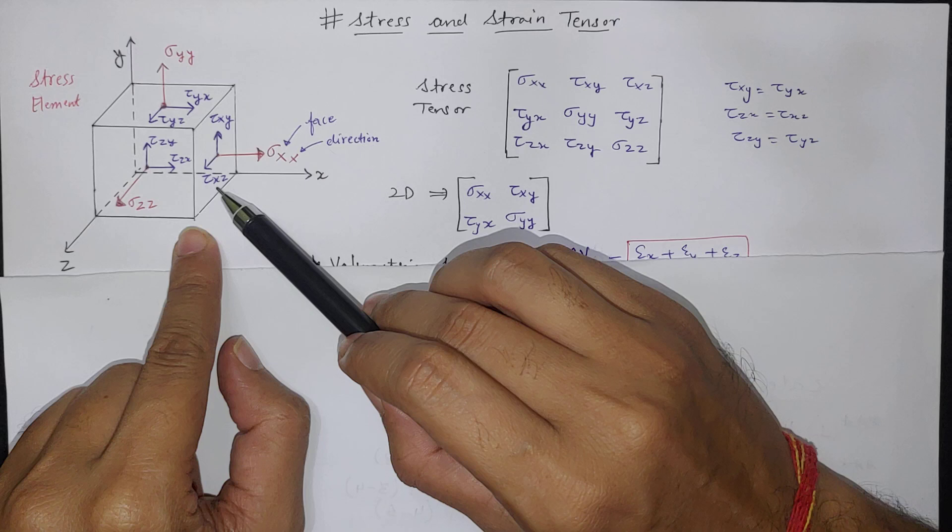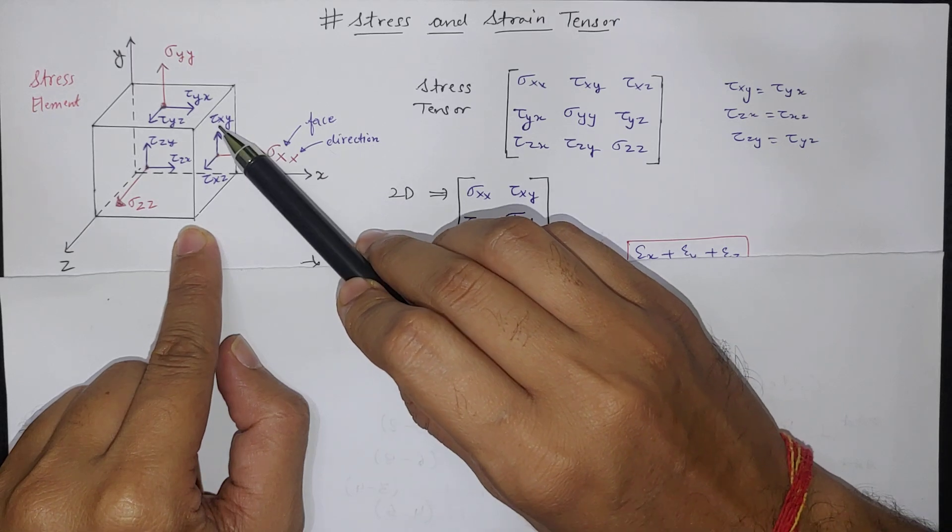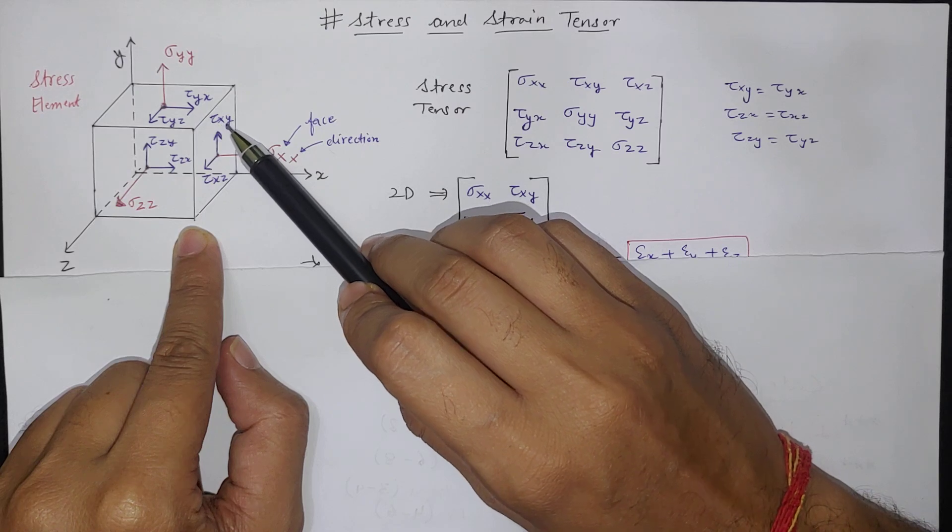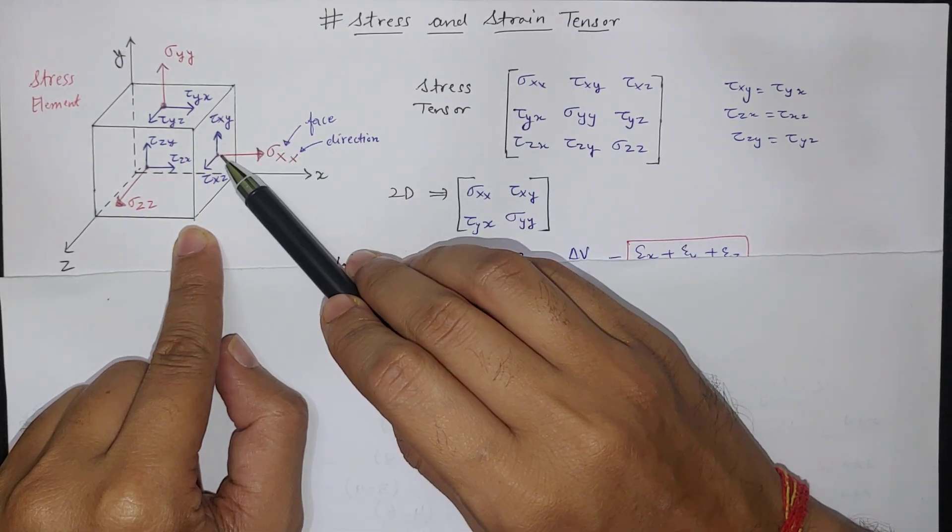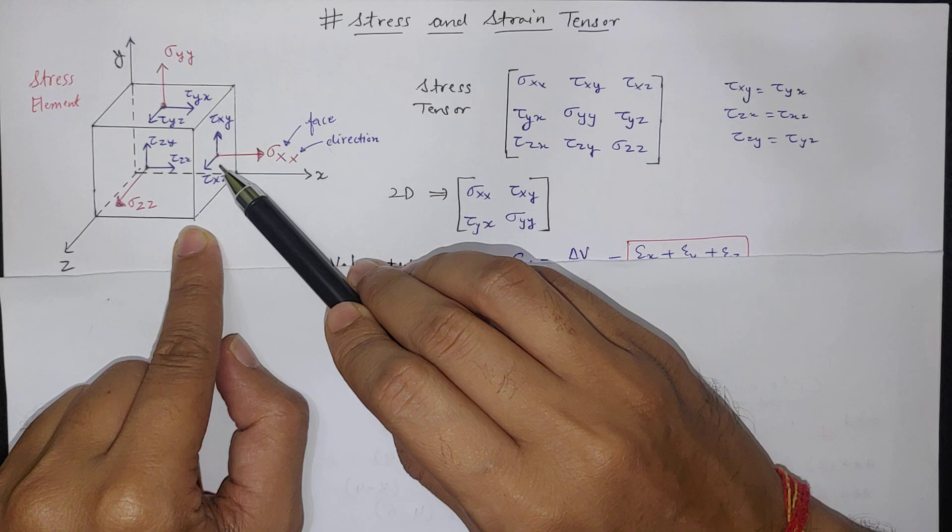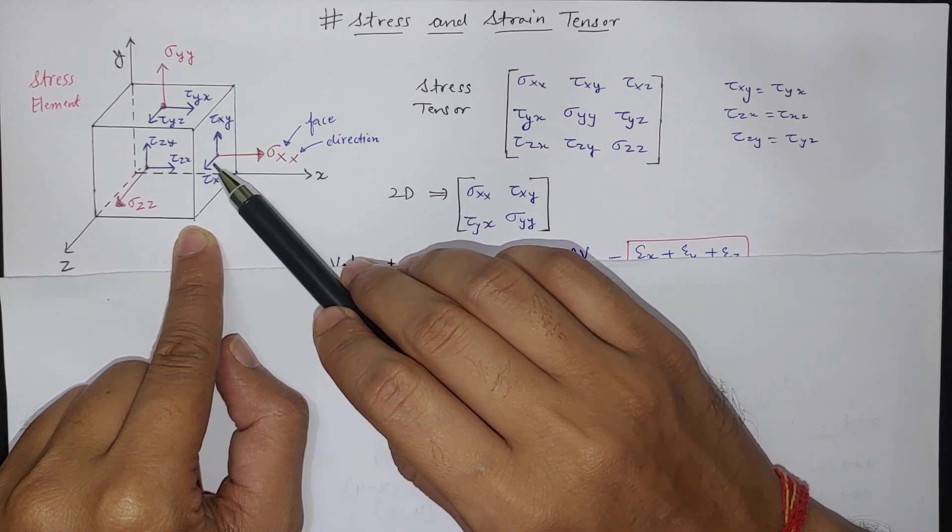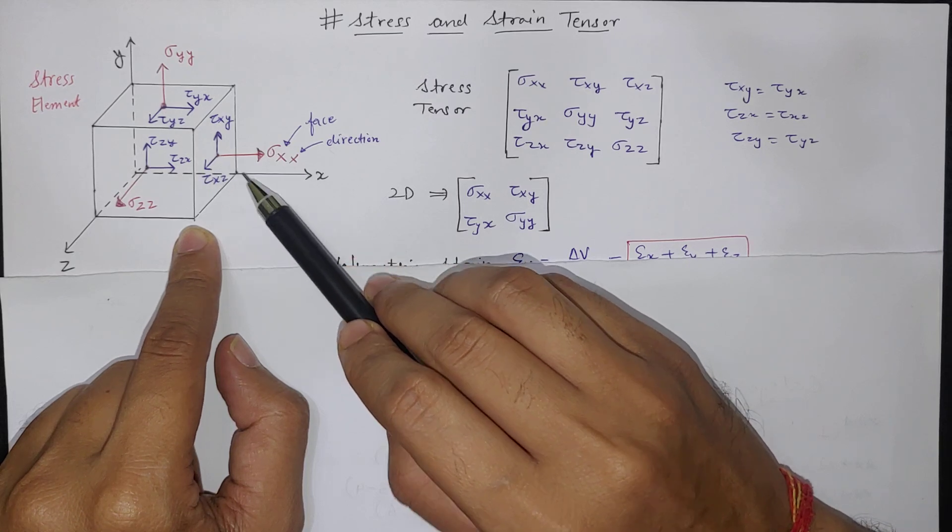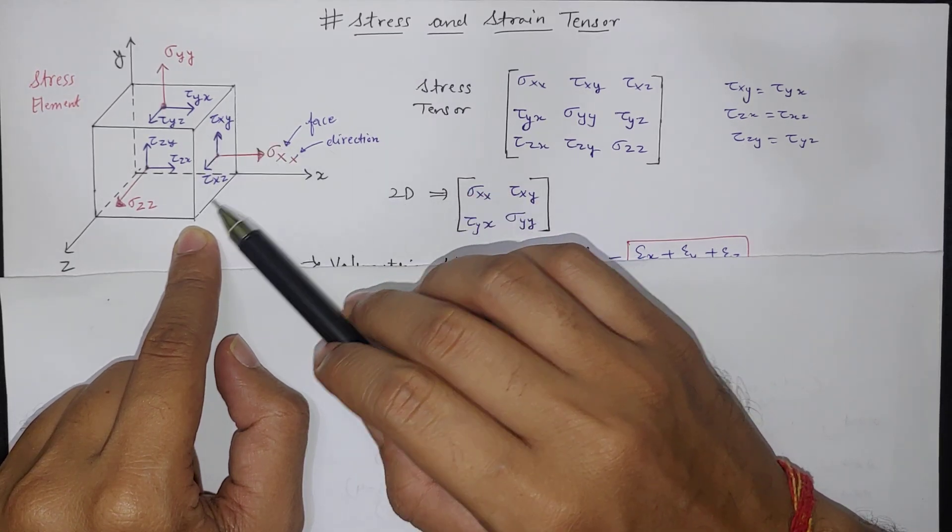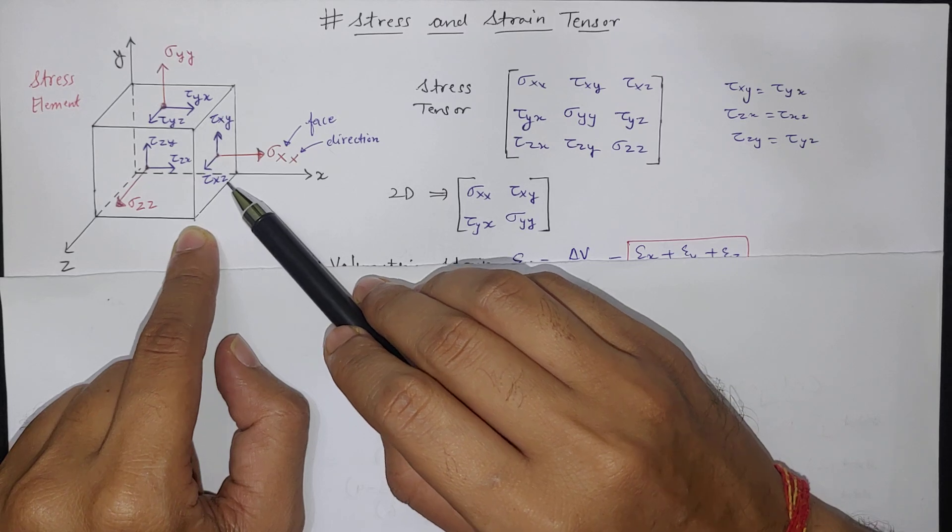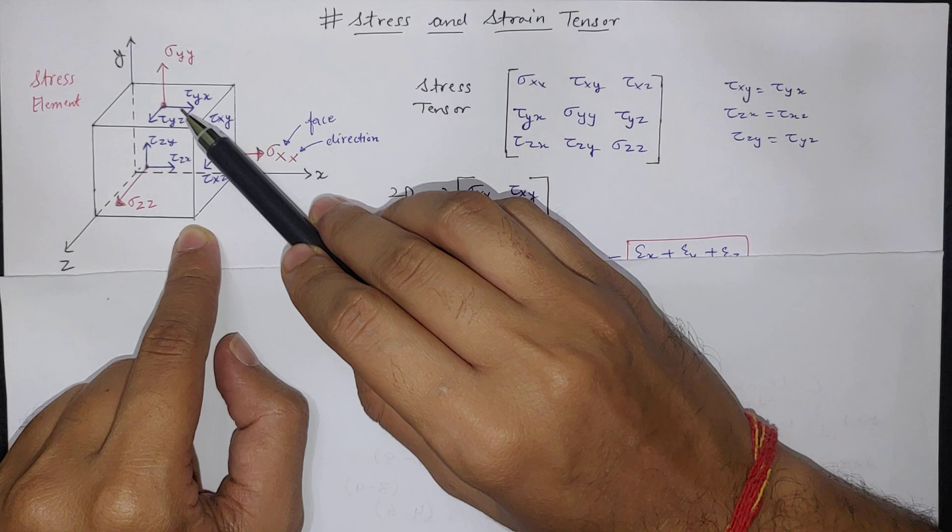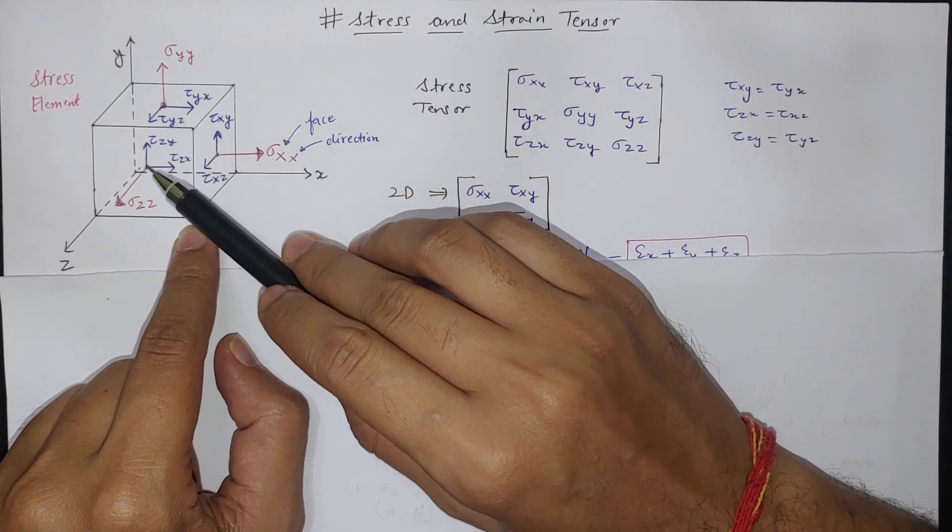So like here tau XY means first X is face and then Y is the Y direction upward. Here first X is the face in X direction and the second one is Z direction. So in X direction it's an X face that's why X and the second is the direction of this stress.